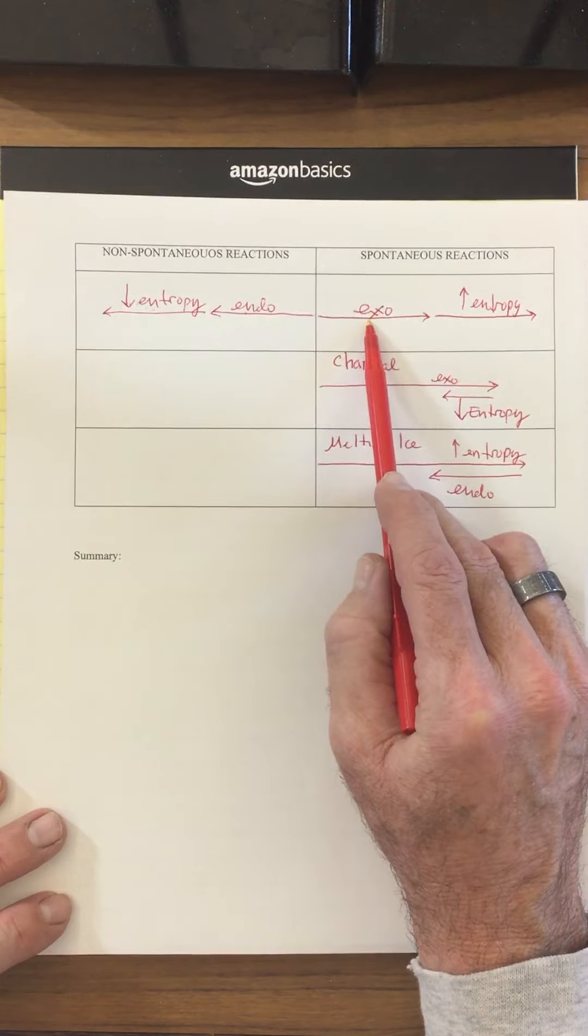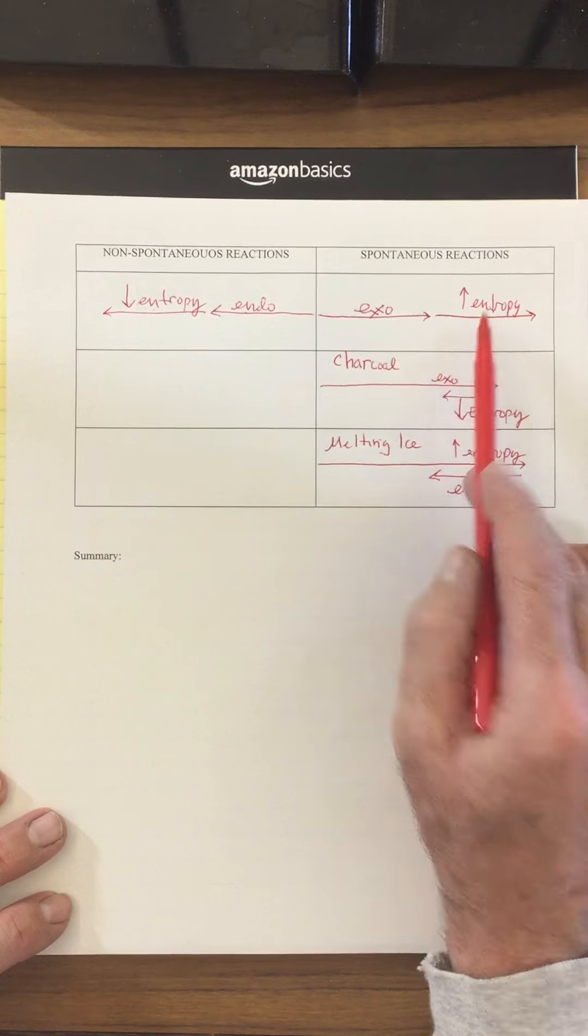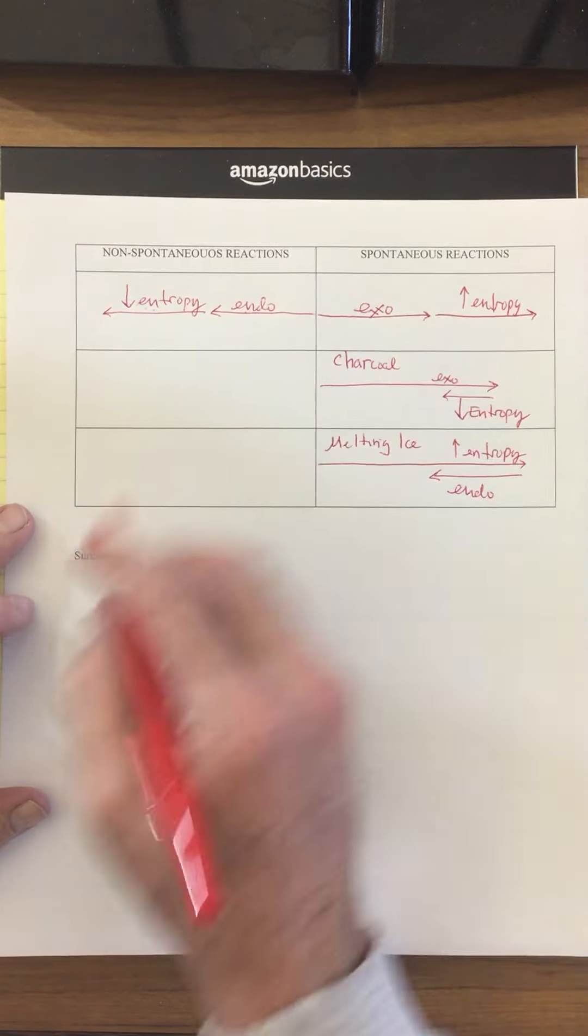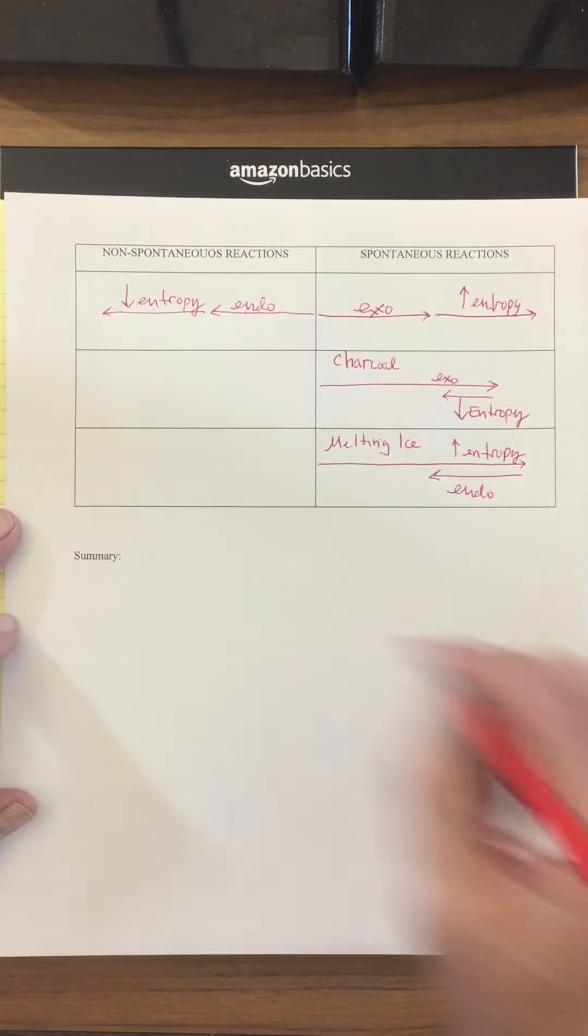If you have both exothermic reactions and increasing entropy, going into more chaos, you'll have spontaneous reactions. So if you have both of those, you'll have a spontaneous reaction.